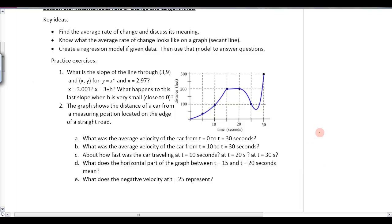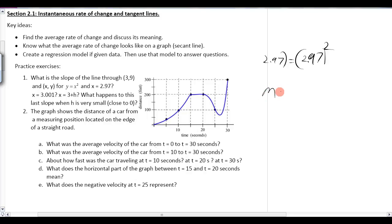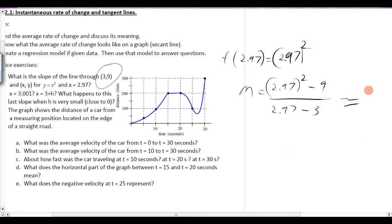So problem number one, what is the slope of the line through (3,9) and (x,y) for y equals x squared and x equaling 2.97? So essentially what this problem is asking is, evaluate f of 2.97, which would be 2.97 squared, and then find the slope. So the slope would be, our slope would be y2, which would be 2.97 squared minus the point they want us to compare it to, which would be (3,9), divided by the x values of 2.97 minus 3.